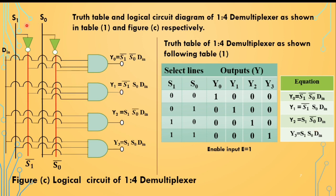In the logical circuit we have two select lines s1 and s0. There is a line for s1, a line for s0, a line for s1_bar, and a line for s0_bar. We use 4 AND gates. Din is the single input and we will get 4 output lines. The NOT gates provide the complemented signals: when input is 1, output is 0 and vice versa.